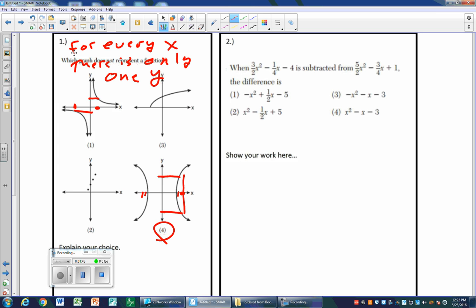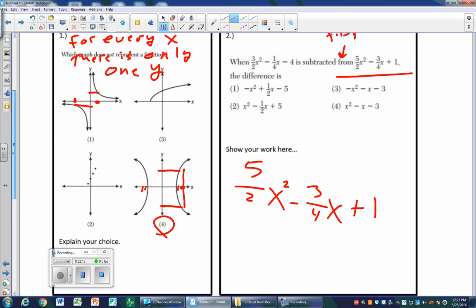Number two. When 3x² minus 1/4 x minus 4 is subtracted from 5/2 x² minus 3/4 x plus 1, from means first. So that means we got to write that down on top. Show your work here.